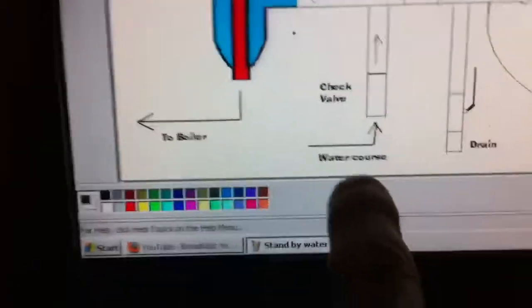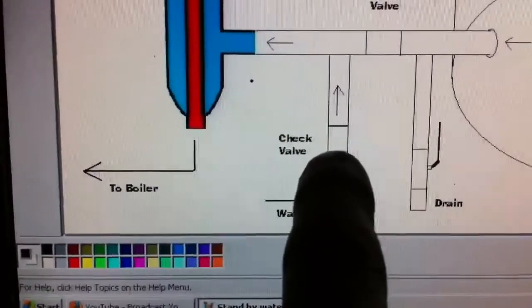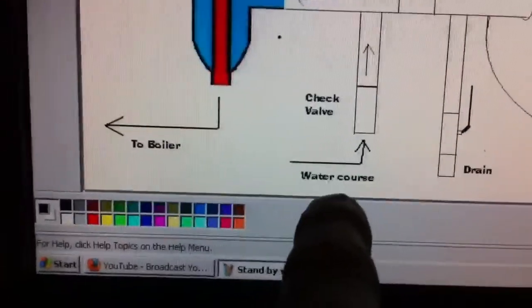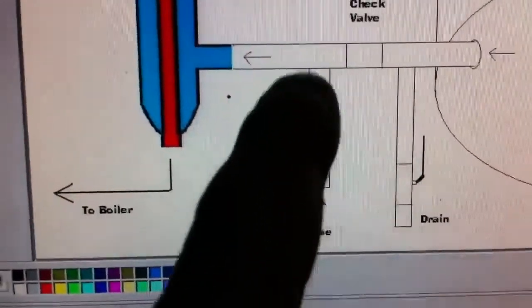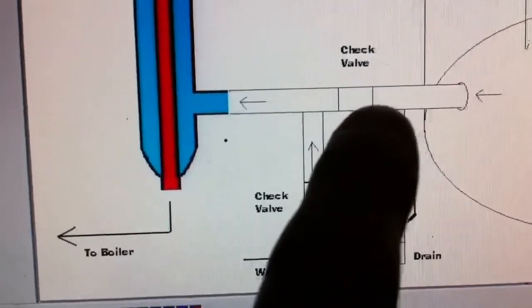So we understand that part, correct? Now here, let's start from right down here. Here I put a check valve. This is your water source from the city, from your well, from wherever you're getting your water from. It comes in right here. And there's another check valve right there going this direction.